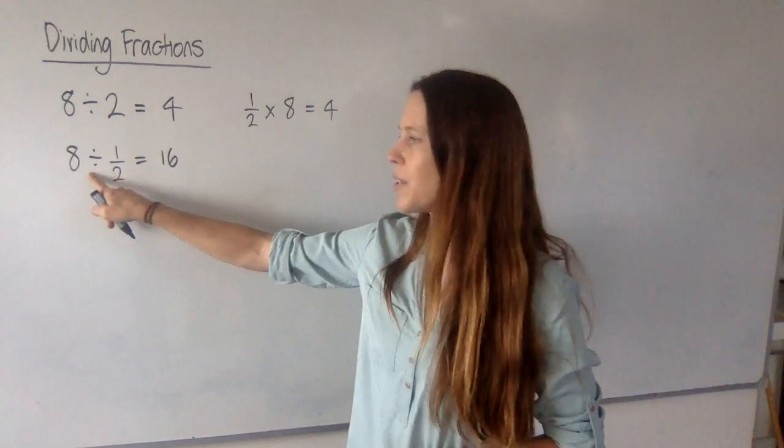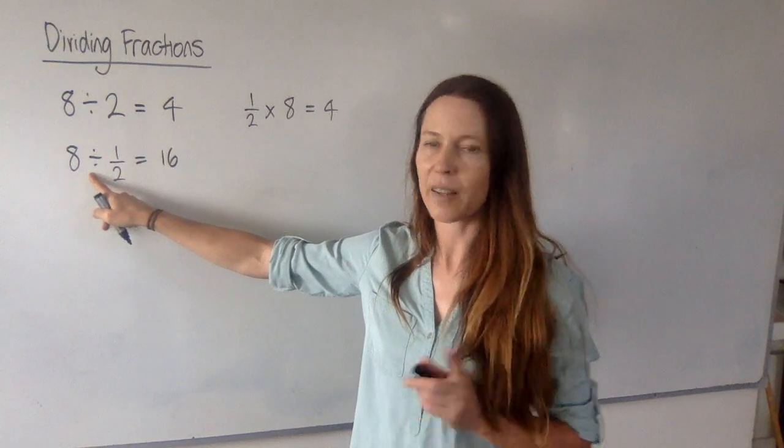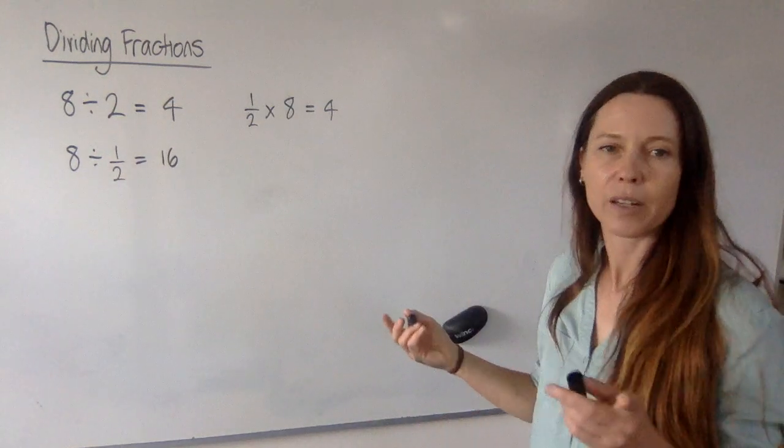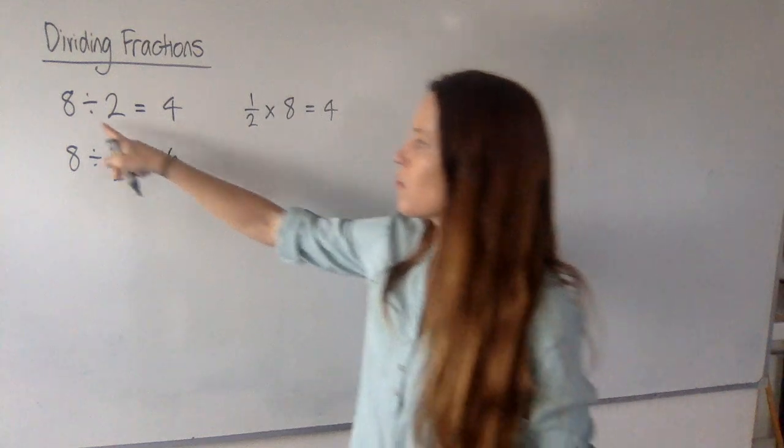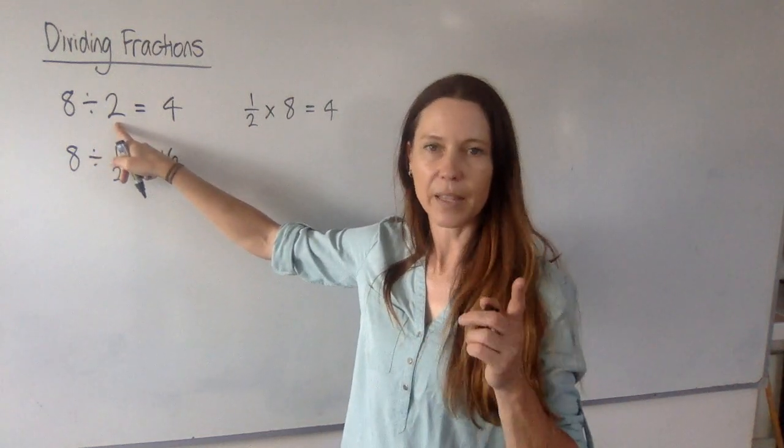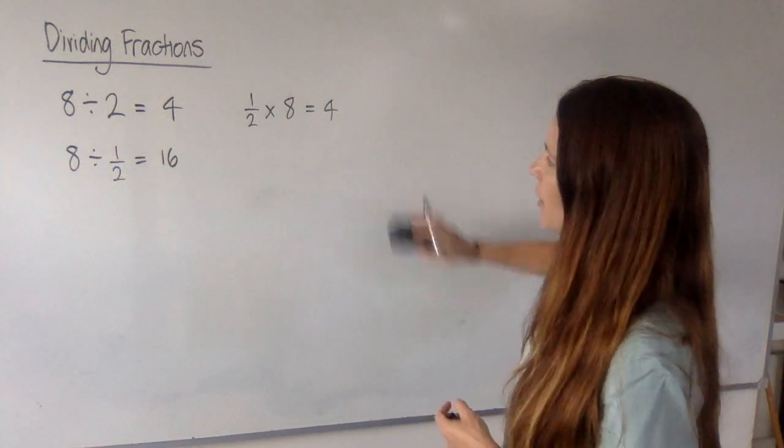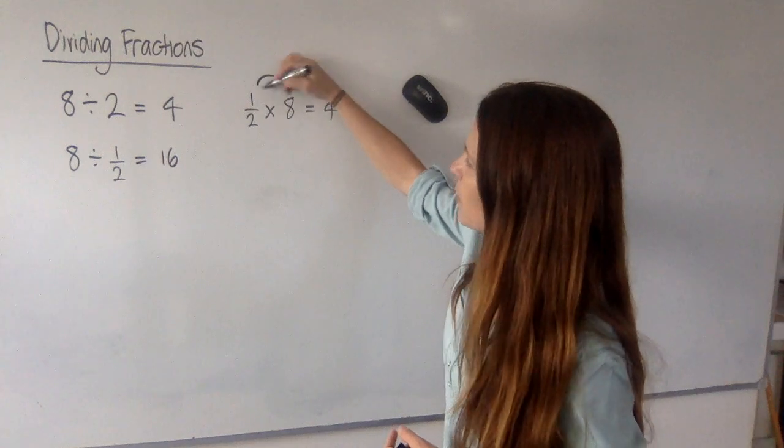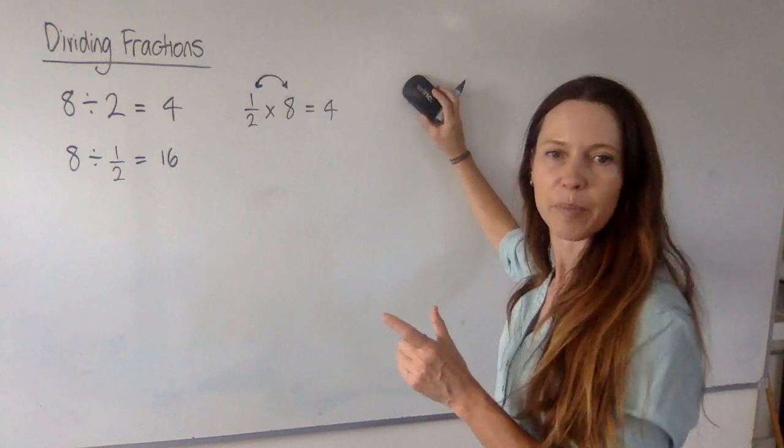Well, just the same way, we can turn this one into a multiplication as well and make it a lot easier. Now, what's the trick? Well, the trick is that if you're dividing something by 2, that's the same as you're multiplying it by a half. And here,